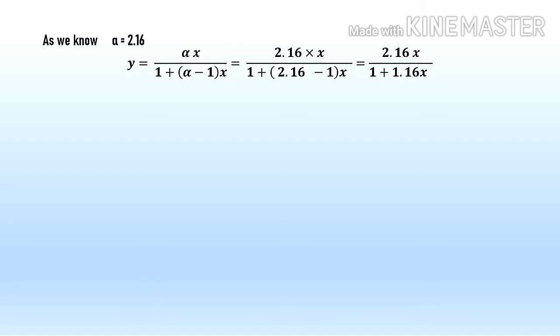Now let's calculate the value of y. For x equals 0 we get y equals 2.16 times 0 divided by 1 plus 1.16 times 0, which equals 0.